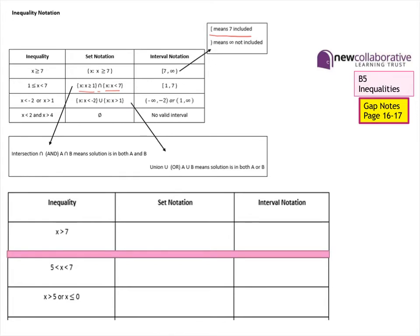To reinforce this, we have a table with three examples of inequalities and their representations in set notation and interval notation. For the first one, X greater than seven: in set notation that's {X such that X > 7}, and in interval notation we are not including seven but including all values above it. For the next example, X greater than five and less than seven: in set notation that's {X such that X > 5} and {X such that X < 7}.